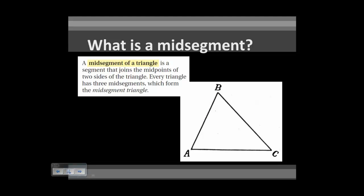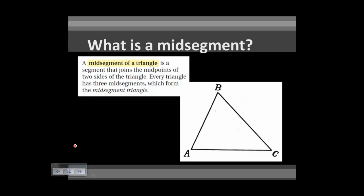The mid-segment of a triangle is a segment that joins the mid-points of two sides of the triangle. If we look at triangle ABC and want to draw a mid-segment, we need to join the mid-points of two sides. Taking segment AB, let's say this is the mid-point where the two halves are congruent — we'll call that mid-point P.